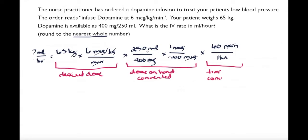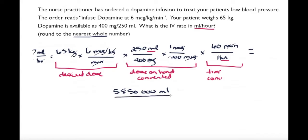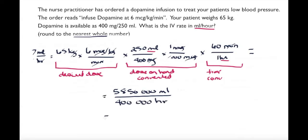Now that I've eliminated everything except for mils per hour, I can go ahead and solve. So this time I'm going to multiply everything on the top: 65 times 6 times 250 times 1 times 60 is equal to 5,850,000 mils. I multiply everything on the bottom: 400 times 1,000 equals 400,000 hours. Further solve this calculation.